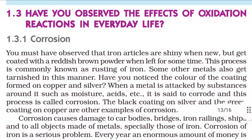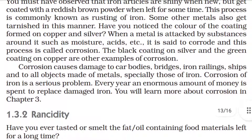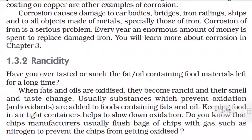1.3 Effects of Oxidation Reactions in Everyday Life. 1.3.1 Corrosion: Iron articles are shiny when new but get coated with a reddish-brown powder when left for some time — this is commonly known as rusting of iron. When a metal is attacked by substances around it such as moisture, acids, etc., it is said to corrode, and this process is called corrosion. The black coating on silver and the green coating on copper are other examples of corrosion. Corrosion causes damage to car bodies, bridges, iron railings, ships, and all objects made of metals. Every year, an enormous amount of money is spent to replace damaged iron.